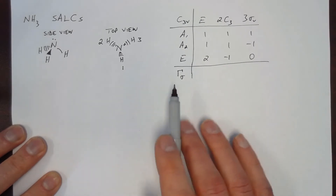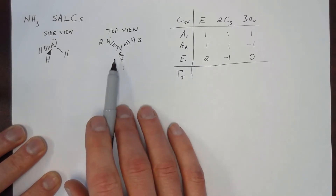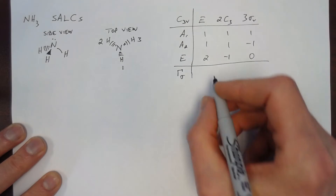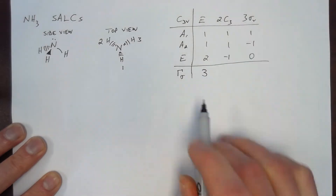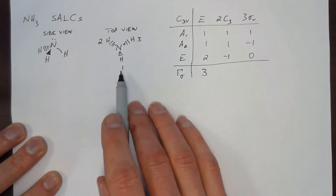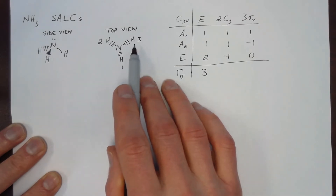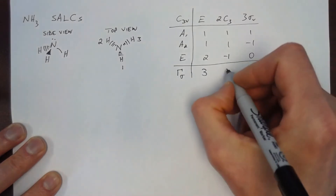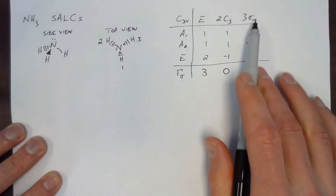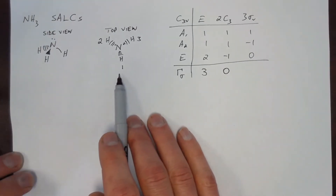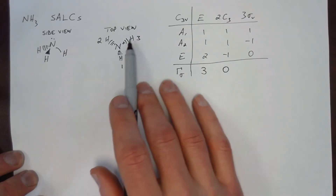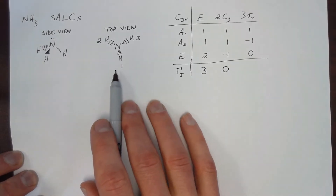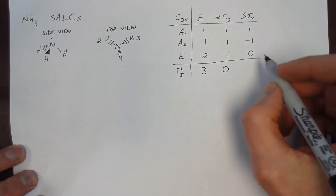The character is only dependent on whether or not these orbitals stay in place. For the identity operation E, all three orbitals stay in place, so the character of that matrix is three. There are two C3 operations — one clockwise and one counterclockwise — and in both cases none of the sigma orbitals stay in place, so the character is zero. There are three planes of symmetry, and in each case one sigma orbital remains in place, so the character is one.